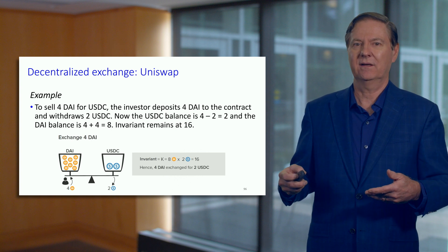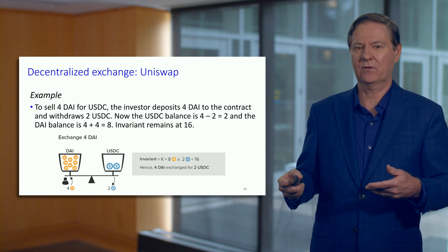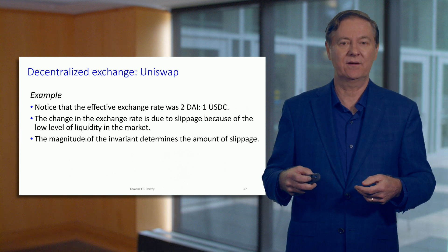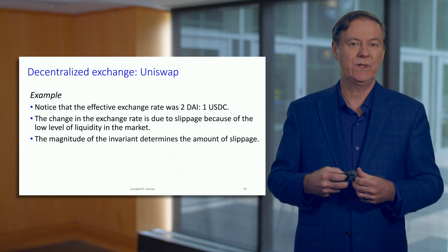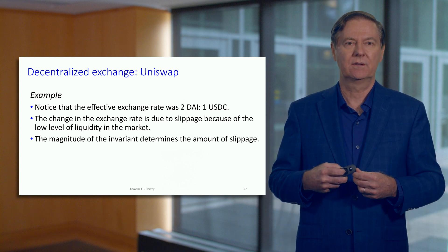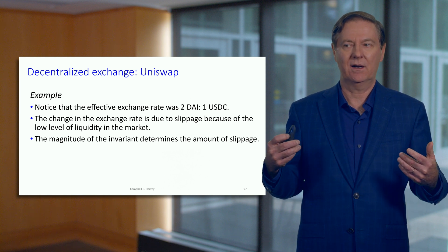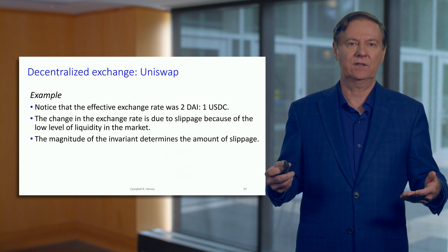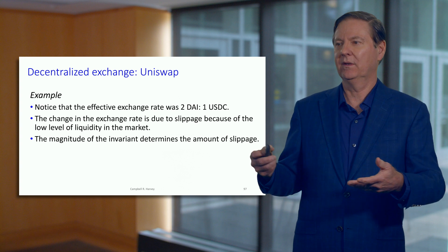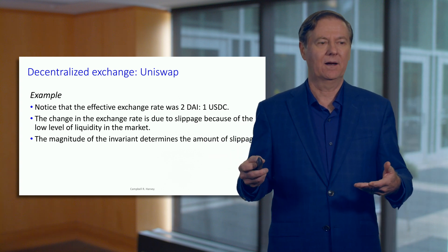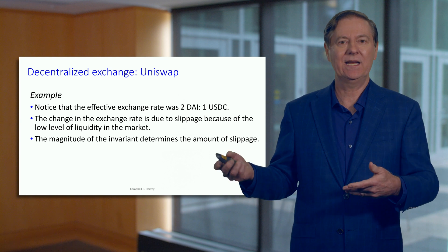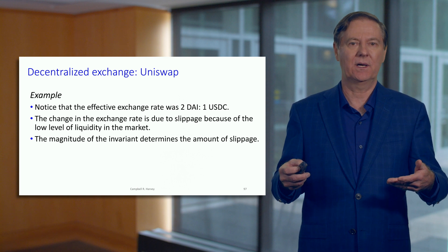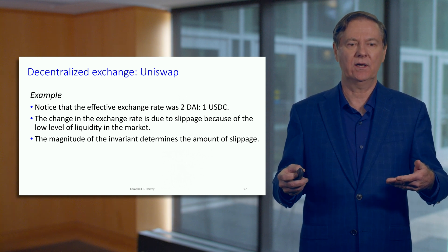You can see that's a very considerable decrease in value. The effective exchange rate here was 2 DAI for 1 USDC. We sometimes call this slippage, but it is really the result of insufficient liquidity in the pool. The mechanics work, but it doesn't make any sense that it would take 2 DAI to buy 1 USDC — certainly not on the open market.